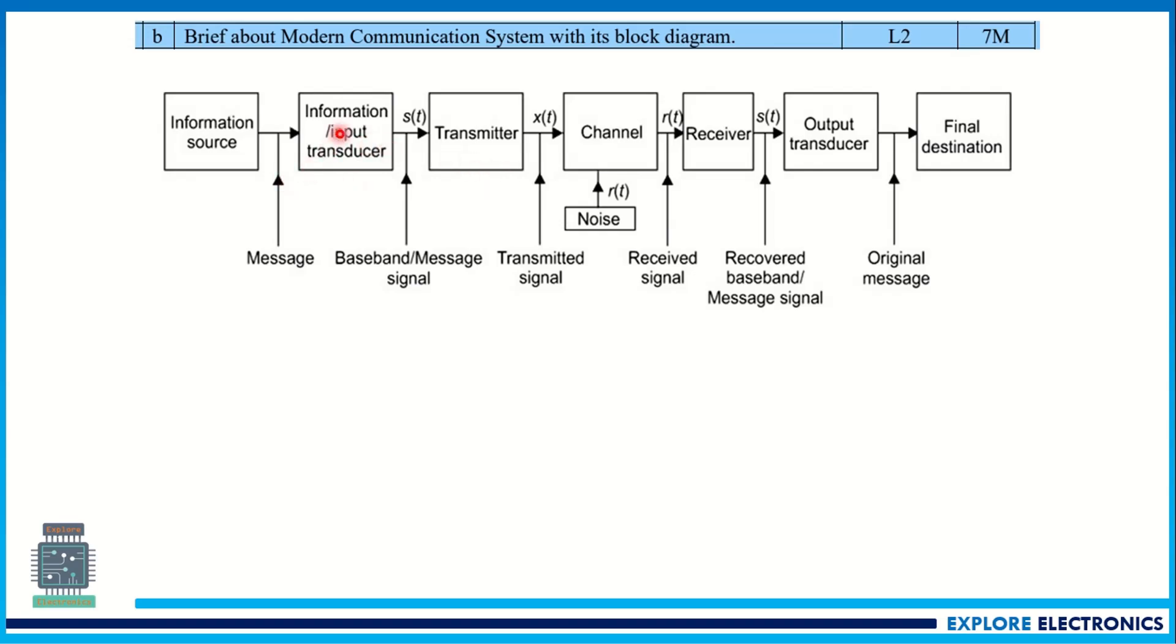And coming to the transmitter side, here is the transducer input transducer. It will convert that to the message signal. Here is the physical quantity that will be converted in input transducer to the electrical quantity signals. That will be given to the transmitter. This will do some modifications and transmit the signal. Actually modulation happens in transmitter, and then to the channel.